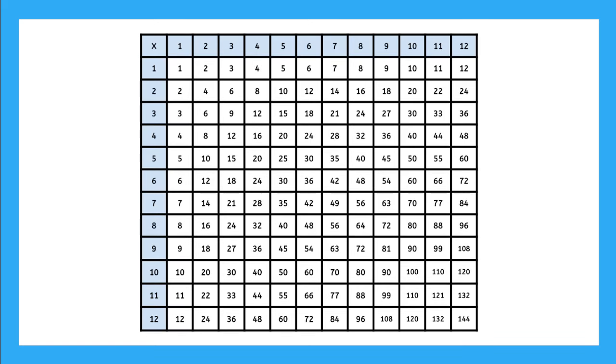I can also use my multiplication chart to divide. Let's say I have 35 divided by 7. Well, first I find my divisor on the side, 7. And then I go across until I find 35, right here. And now I go straight up. Whatever number is at the top is my answer, 5. So 35 divided by 7 is 5.